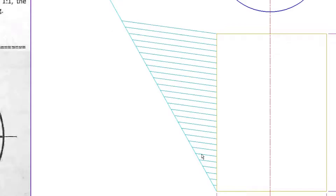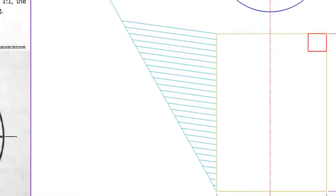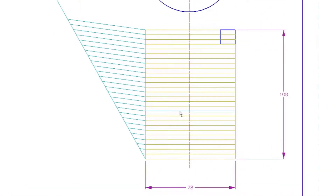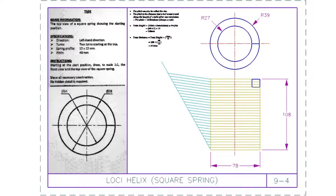Mark 27 points on the line, taking note that the first mark is zero, not one. So zero, then one, two, three — and the last point is number 27. Then place your set square on that line, put a ruler underneath, shift the set square down, and draw the horizontal division lines across into your front view to form the grid.